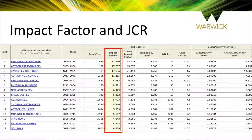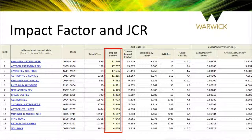JCR is an abbreviation for Journal Citation Reports, a citation-based journal ranking resource published annually by Thomson Reuters. The JCRs for this year and for previous years can be accessed from the University of Warwick catalogue Encore.